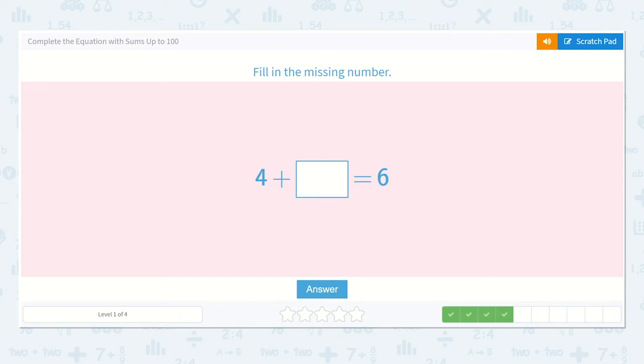Now we have 4 plus a number is equal to 6. Well I know I have 4, 5, 6. How many dots was that? 2. So 4 plus 2 is 6.